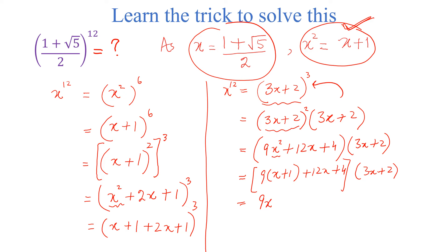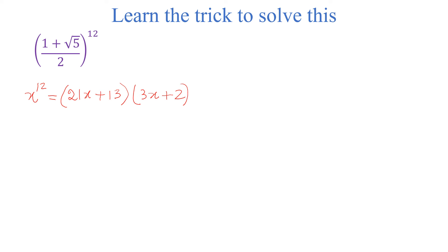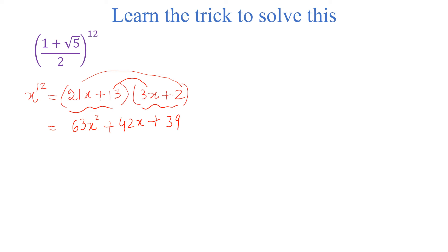Simplifying, 9x plus 9 plus 12x plus 4 gives us (21x plus 13) times (3x plus 2). Now multiplying these two factors: 21x times 3x is 63x², plus 42x, plus 39x, plus 13 times 2 which is 26.